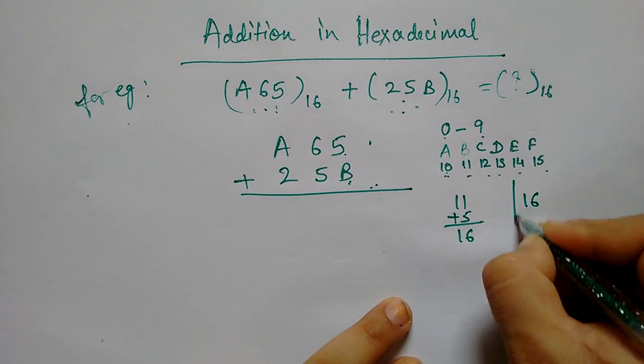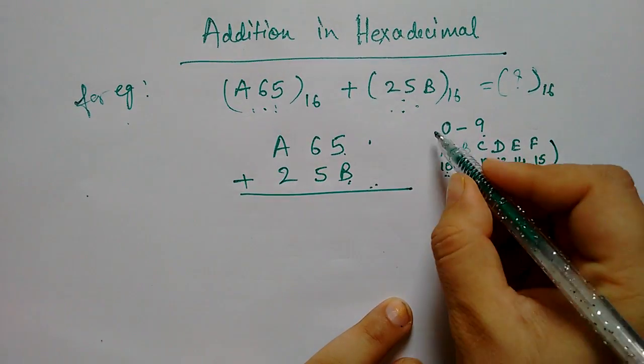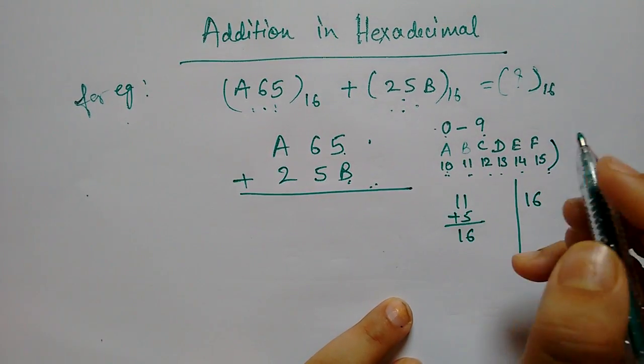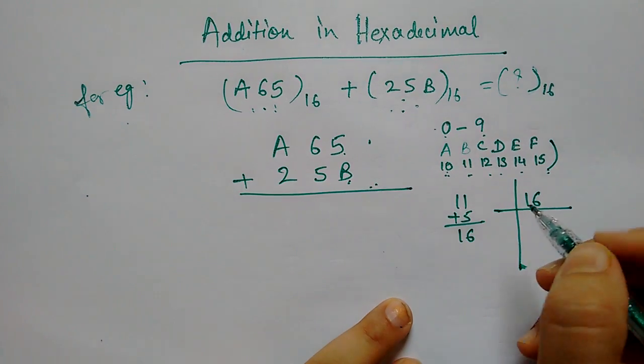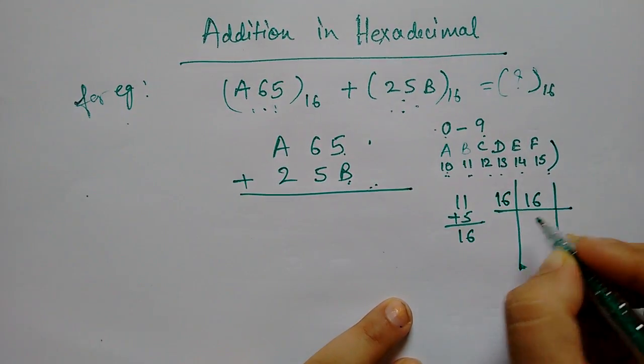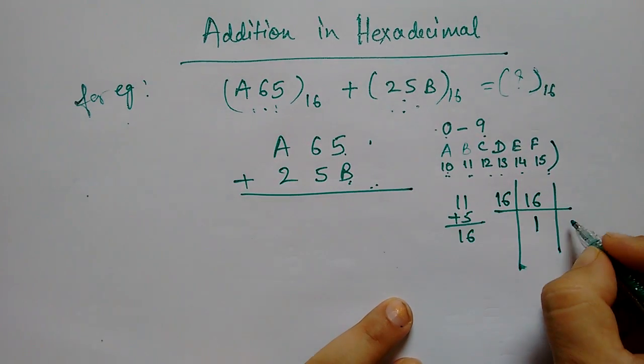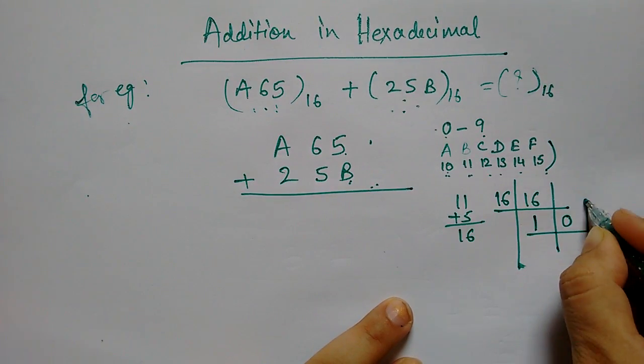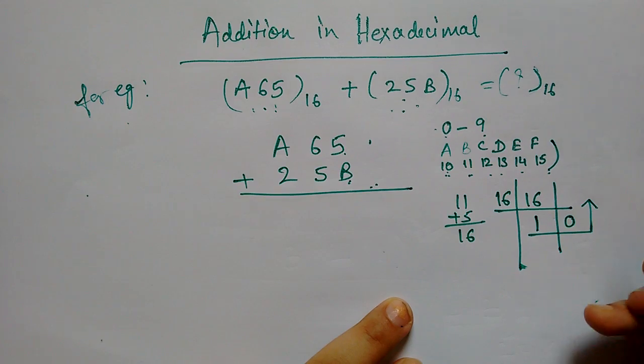16. Now, 16 is in decimal. Hexadecimal 0 to 15 is F. Now, 16 you have to convert it in hexadecimal. So, simple. You divide 16 from 16. So, 16, 1 is here. Remainder is 0. And you copy it.